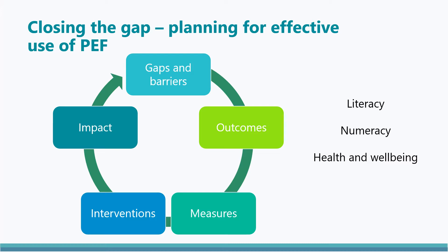The next stage is to identify the targeted approach or intervention that will achieve the outcome and then plan for its implementation. The approach or intervention should be additional to those that would already be happening. Once the intervention begins, the impact should be regularly reviewed using data from the measures and decisions made regarding next steps.